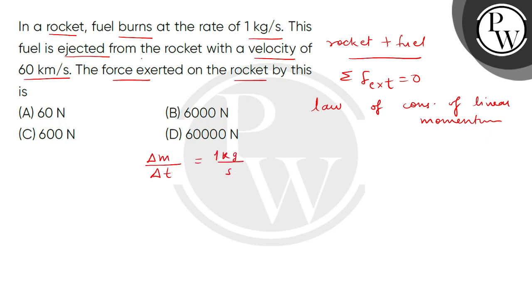And in this rocket, the fuel ejection velocity is 60 km per second. So we can take this as del V is equal to 60 km per second.